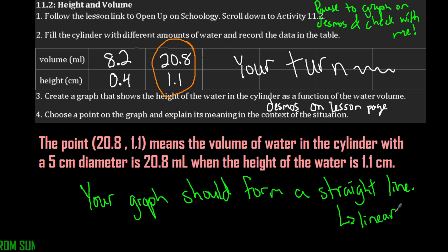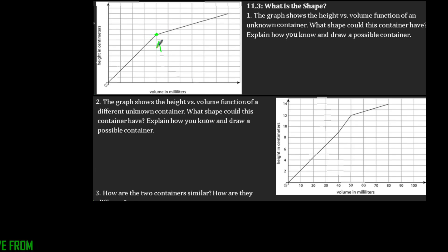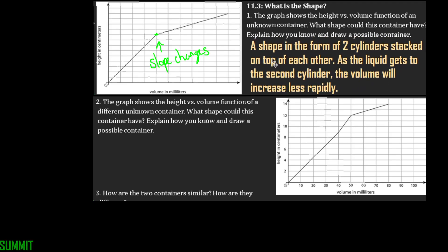Moving on to the next part for 11.3 — it says what is the shape? For number one, the graph shows the height versus the volume function of an unknown container. What shape could this container have? Looking at this graph, the slope changes at this point right here — for every two steps up we move one step to the right, then we change to about three steps to the right for two steps up. So we can say it's a shape in the form of two cylinders stacked on top of each other.